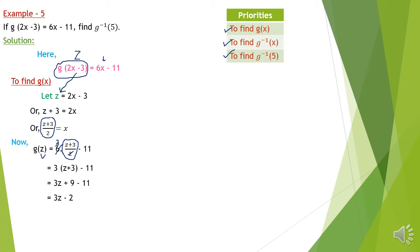We found g in terms of z, but since input variables are dummy variables, we can replace z with x. So g(x) = 3x − 2. The input variable is a generic name — it can be x, y, z — we are more comfortable with x. When we input x, the function becomes g(x) = 3x − 2. Our first task is over. The next task is to find g⁻¹(x), which is very easy using the same three steps.